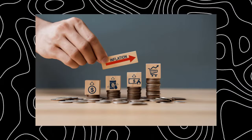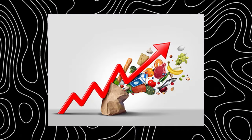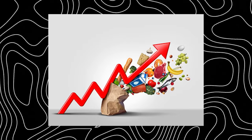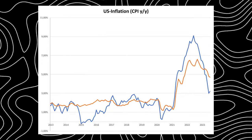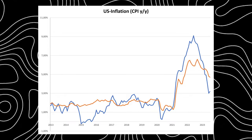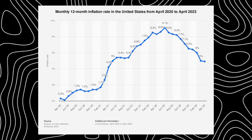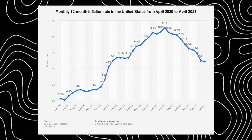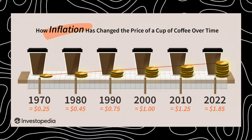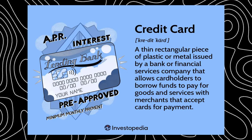Inflation: imagine what $100 could buy in 1970 versus what it buys today — that's inflation at work. Even though you didn't lose money, your money buys less over time. It's a silent reducer of your purchasing power while general prices of goods and services climb. However, inflation isn't entirely bad news — it's a natural economic phenomenon. Experts use tools like the Consumer Price Index (CPI) and Producer Price Index (PPI) to track price changes for consumers and producers respectively.